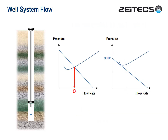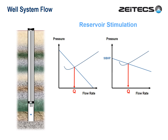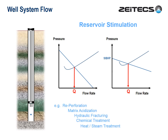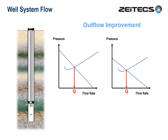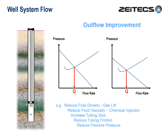Another thing we can do is reduce the gradient of the line — keeping the bottom hole pressure the same, but this time increasing the productivity index. This is typically what we do with reservoir stimulation: matrix acidising, fracking, or various other chemical and heat treatments. Yet another way to achieve flow is to lower the outflow performance line. The shape of the line will actually change, but this is typically the effect of gas lift, viscosity modifiers, and numerous physical de-bottlenecking initiatives.